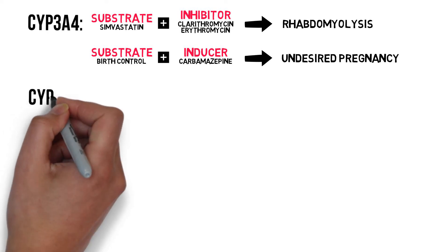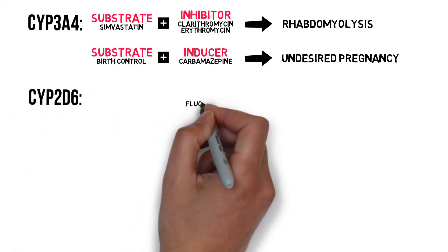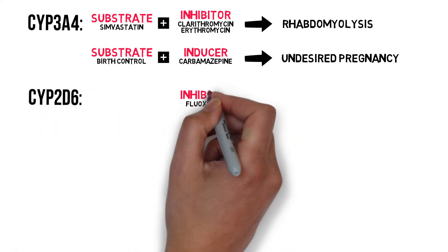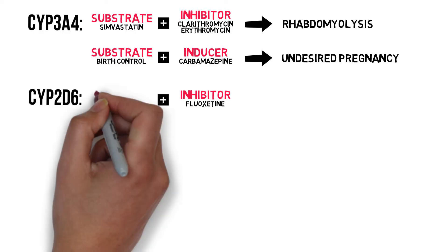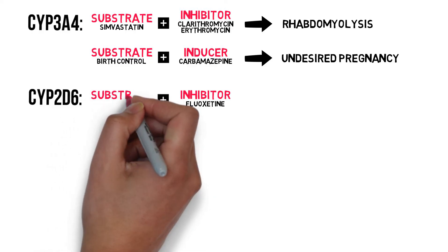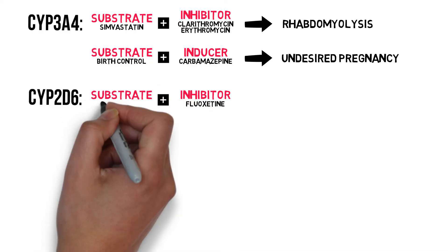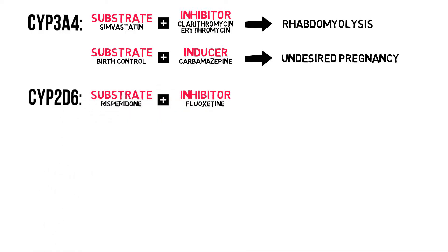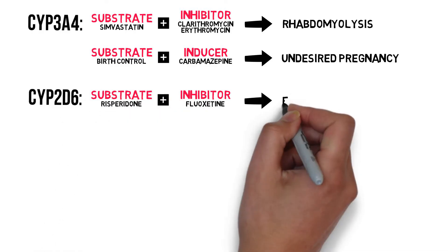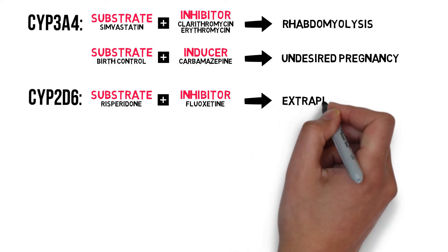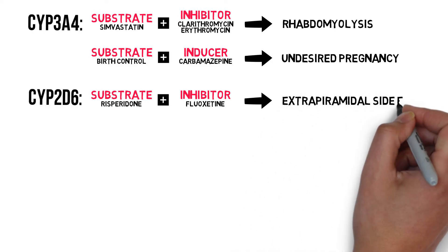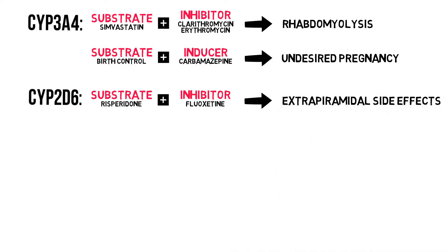For CYP2D6, note that fluoxetine, commonly known as Prozac, is a strong inhibitor, which increases the level of risperidone, an atypical antipsychotic, thus increasing the chance of extrapyramidal side effects.